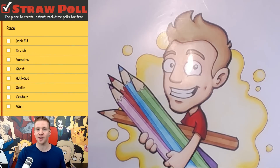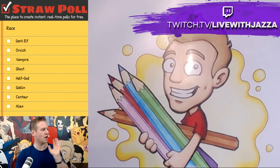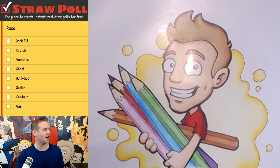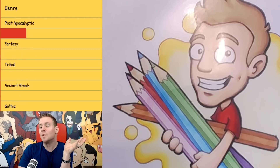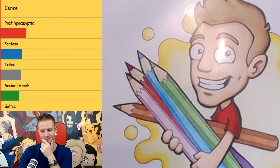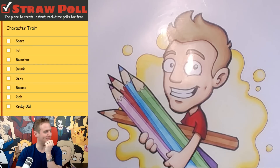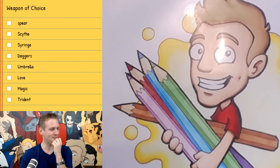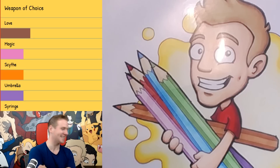G'day ladies and gentlemen, welcome to Draw with Jazza. I'm Jazza, and today the Twitch chat have given suggestions and have been voting on a character's race, genre, character trait, and weapon of choice. I'm now going to see the results for the first time. I'm gonna be designing a ghost in the genre of post-apocalyptic. This is getting more difficult — with the character trait of sexy. And last but not least, with the weapon of choice of love. God damn it, guys, seriously.